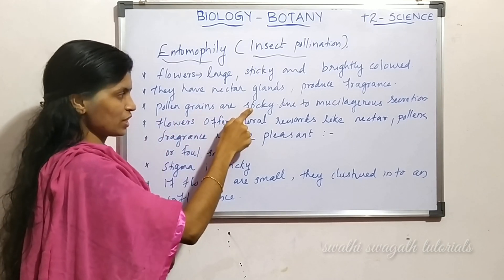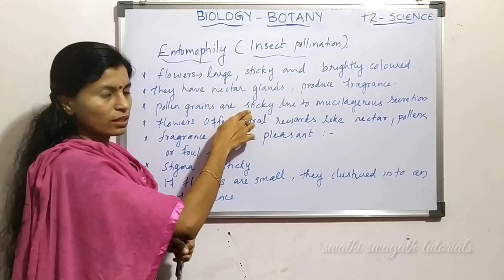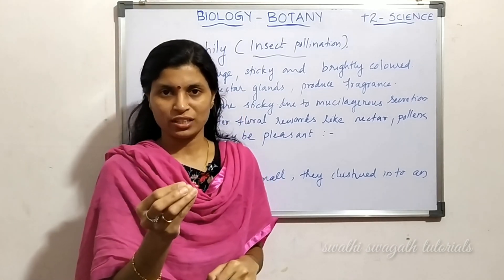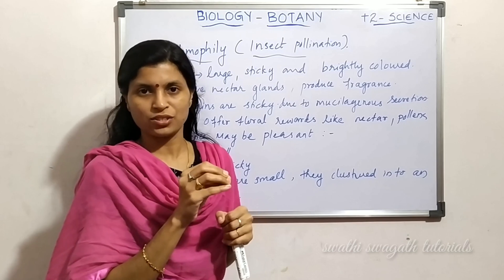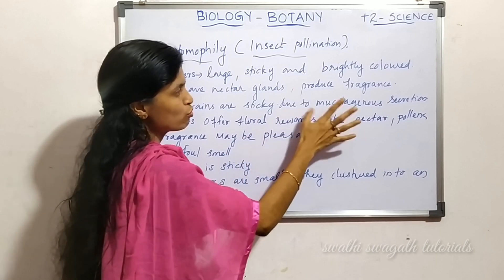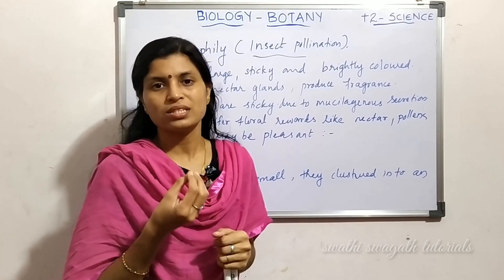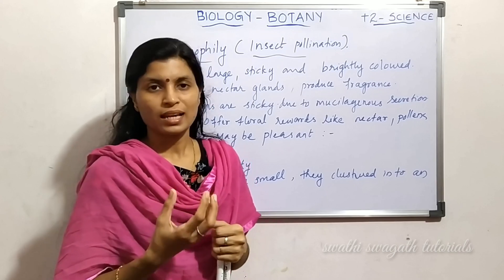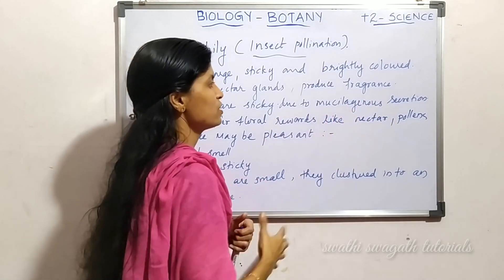Pollen grains in entomophilous flowers are sticky. When an insect visits a flower, the pollen grains stick to its legs. They are sticky due to mucilaginous secretion — a mucous-like substance — which is the same as mucilaginous secretion.